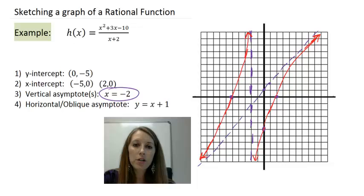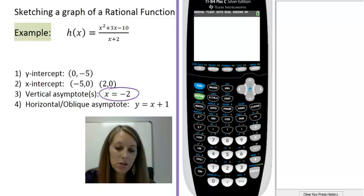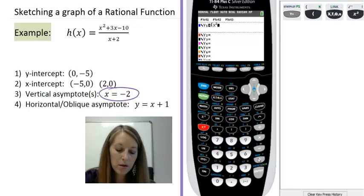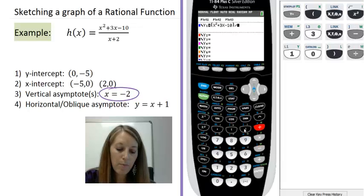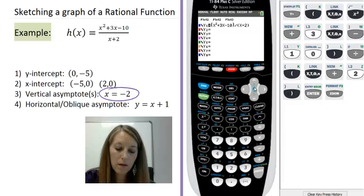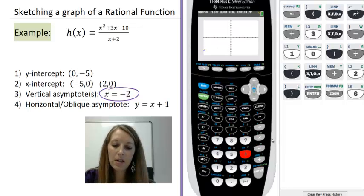As always, I encourage you to double check this by plugging it in your graphing calculator. So first thing I need to do is plug in my equation. Y equals, put parentheses around the numerator, x squared plus 3x minus 10 divided by my denominator of x plus 2. Graph it in my standard window, and I should see my graph here. That should resemble the graph that we've drawn.